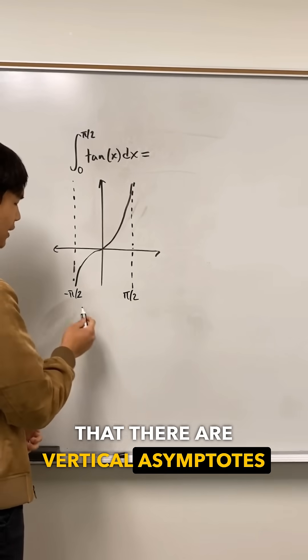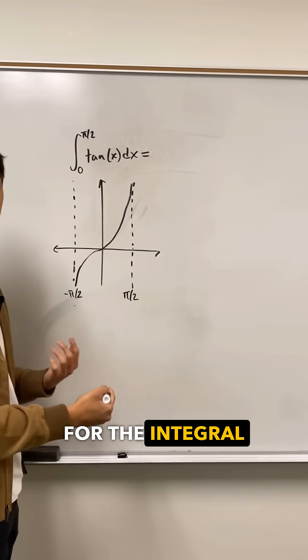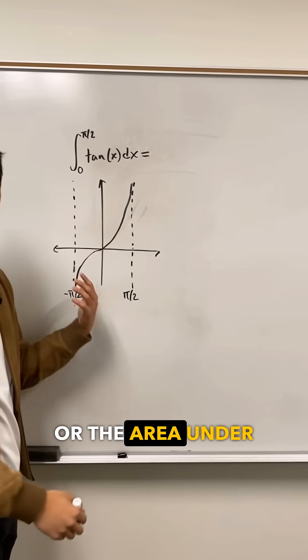Right away, you'll notice that there are vertical asymptotes at minus pi over 2 and positive pi over 2. And the question here is asking for the integral from 0 to pi over 2, or the area under the curve.